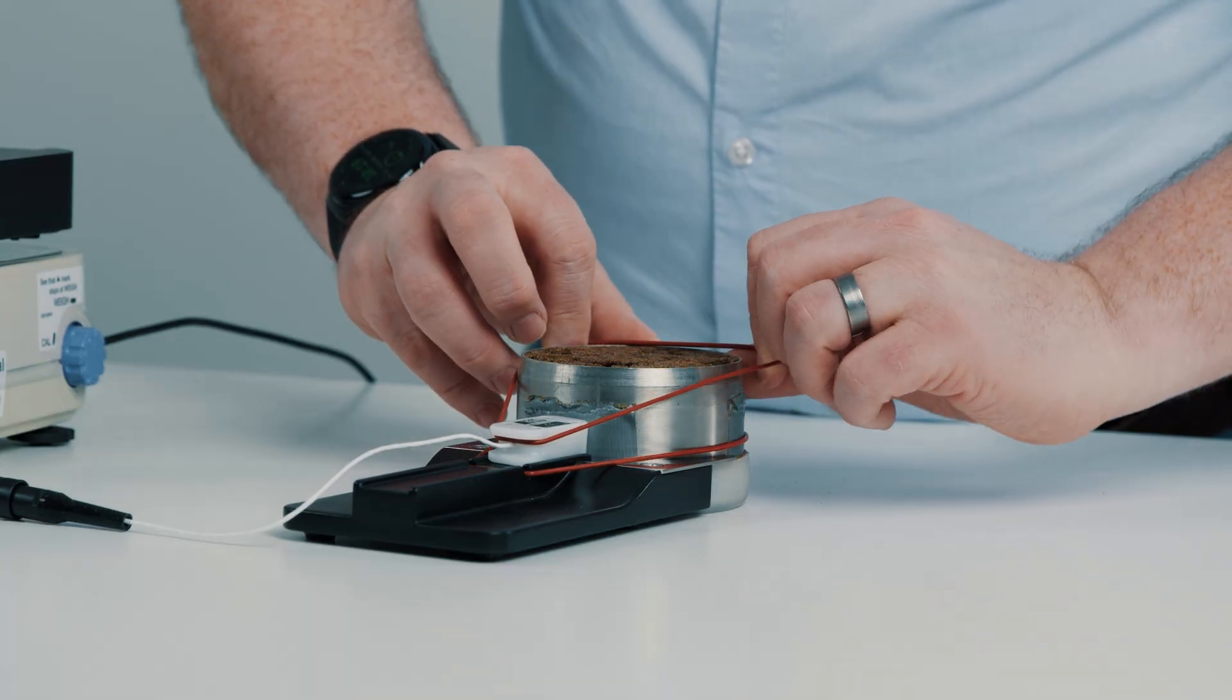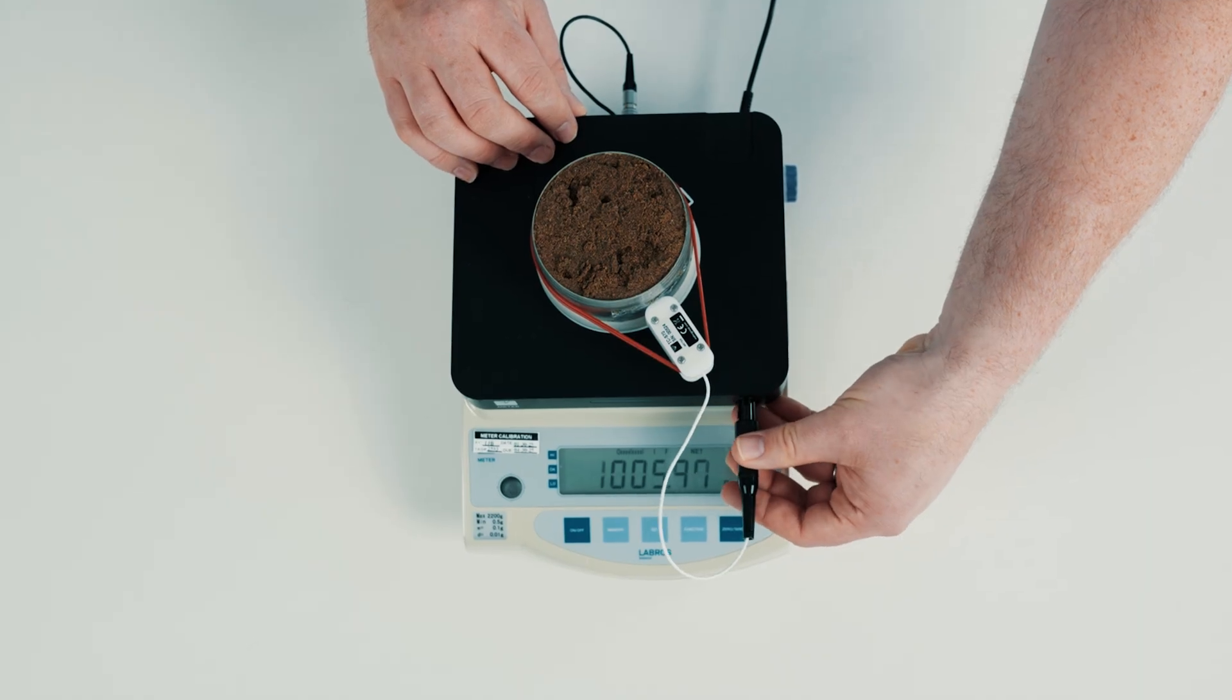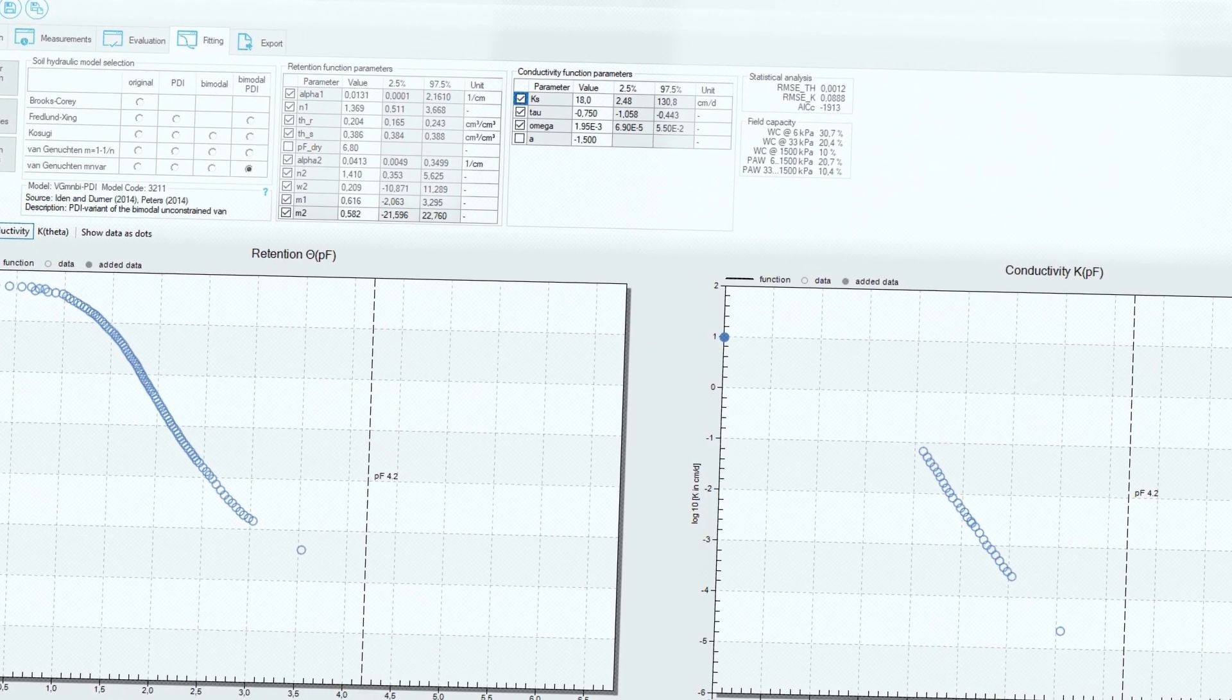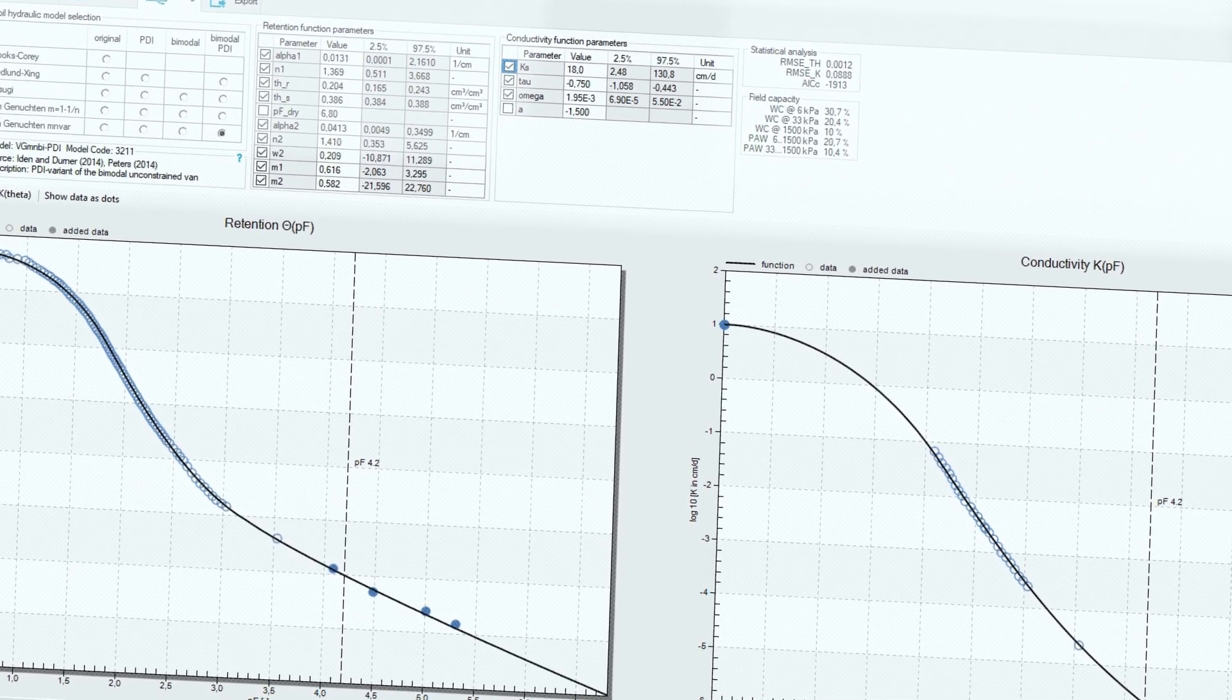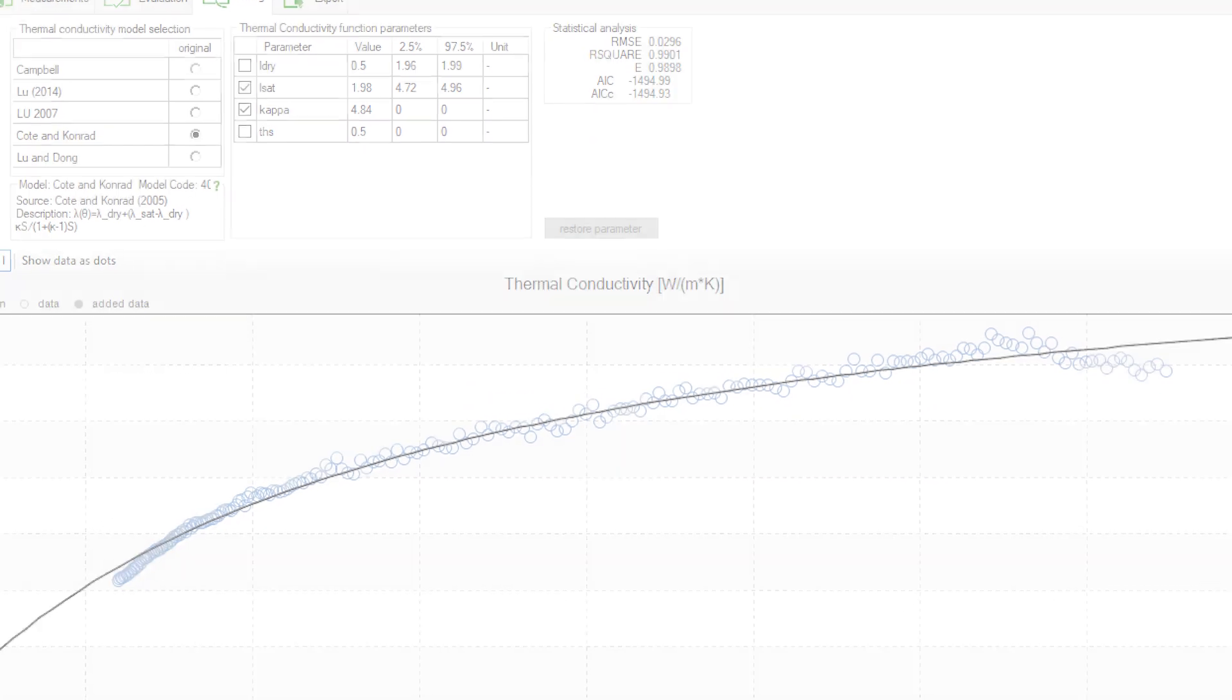Which is why when we test the sand, we want to test the entire relationship of water content to thermal conductivity to see what is the thermal conductivity of the sand in its saturated state all the way down to its oven dried state. And you need these two thermal conductivity values in order to do your thermal design.